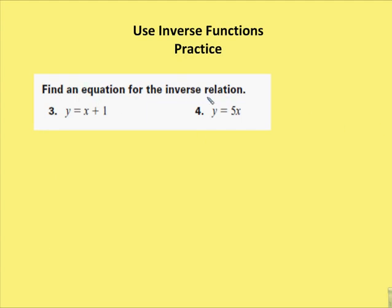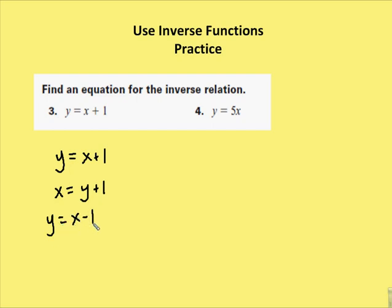Number 2: find the equation for the inverse relation. We substitute x for y and y for x. For y = x + 1, we rewrite as x = y + 1 and solve to get y = x − 1. For the second equation, y = 5x, we rewrite as x = 5y and solve to get y = x/5.